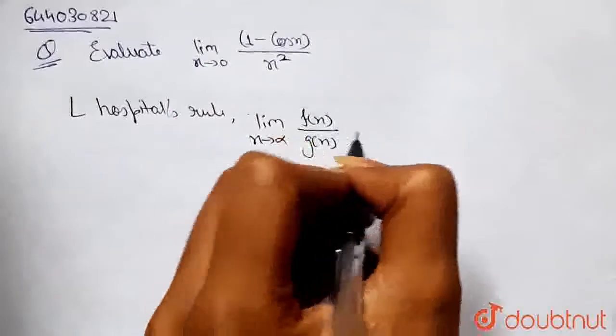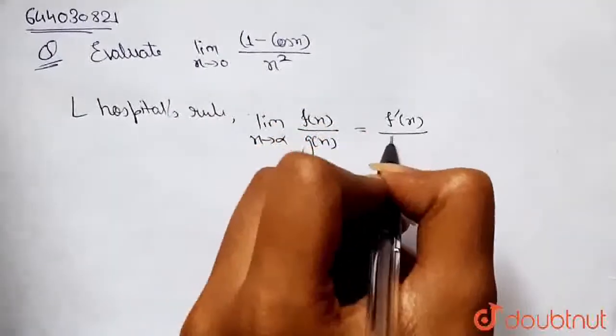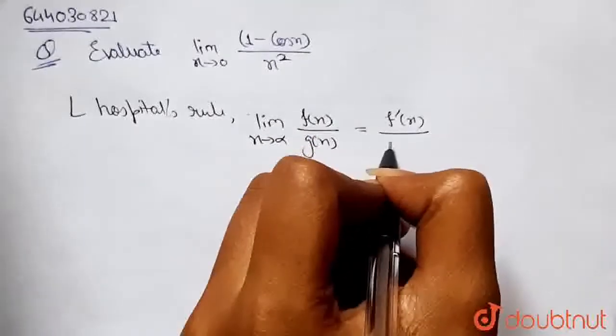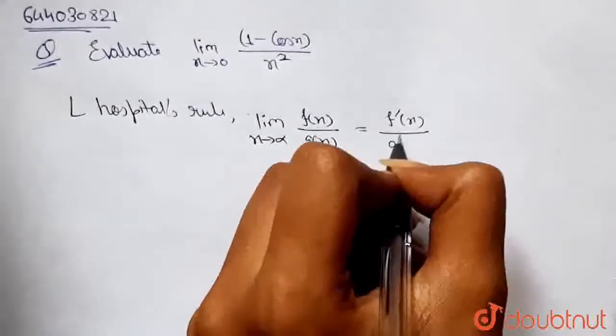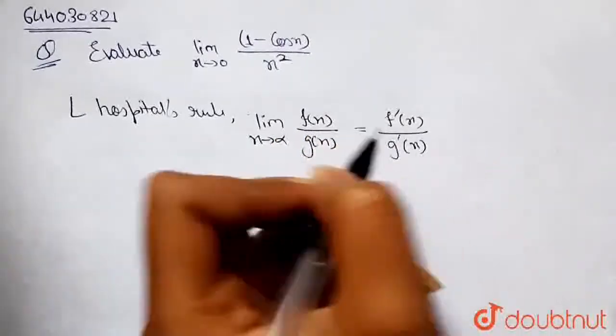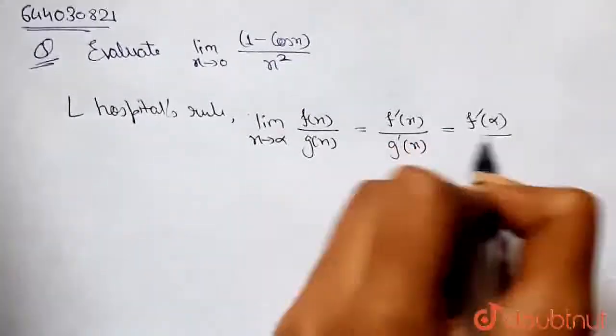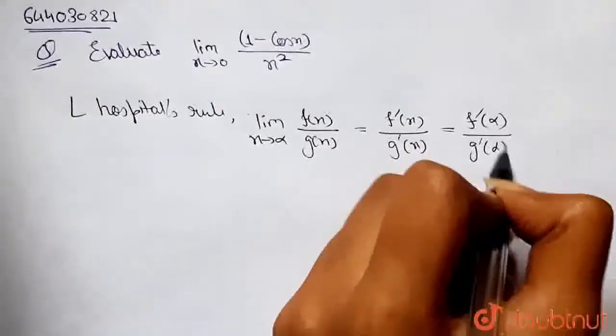then this will become the differentiation of the numerator, that will be f'(x), divided by the differentiation of the denominator, that will be g'(x). And in the place of x, we will put this alpha. So this will be f'(α) divided by g'(α).